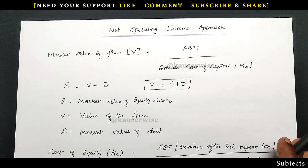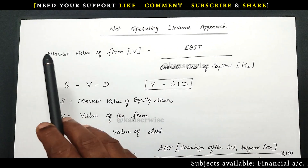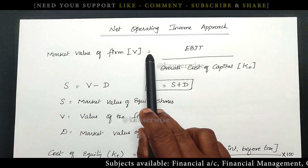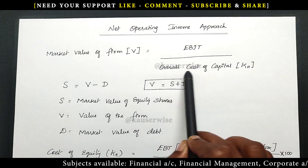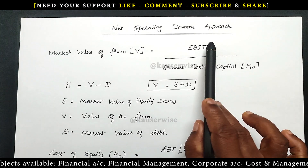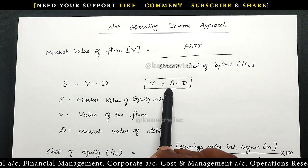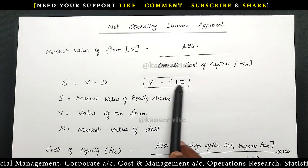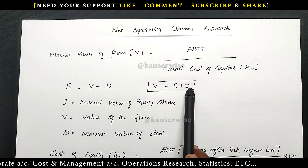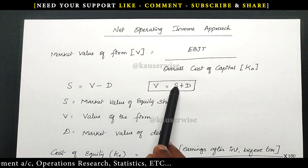Now let us see the formula. In the net operating income approach, we are going to find out two important components. The first one is the market value of the firm, that is V. The formula is: V is equal to EBIT divided by the overall cost of capital, that is K-O. Both values will be given in the problem — simply substitute to find V. For comparison, the formula from the net income approach is V is equal to S plus D, where S refers to market value of shares and D refers to market value of debt.